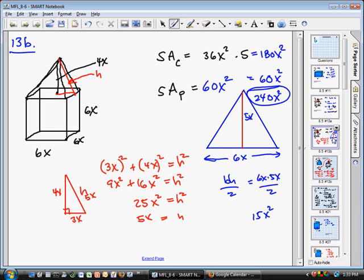How many of those are there on the pyramid? 1, 2, 3, 4. So, I have to multiply that by 4. So, now, here's the surface area of the pyramid. And, of course, these are put together, so there is no bottom. You know what I mean? It's one piece.